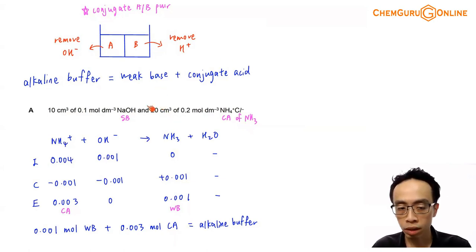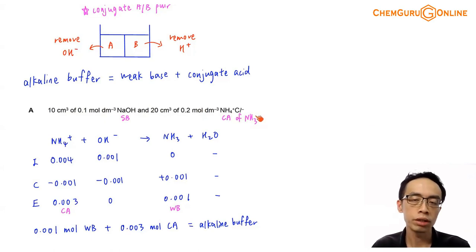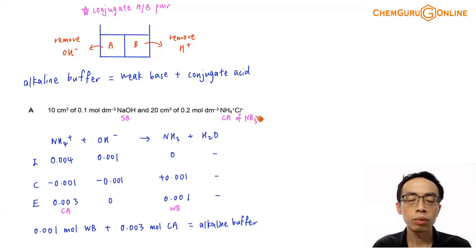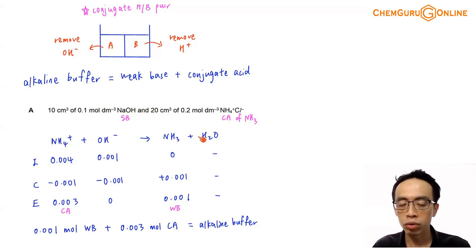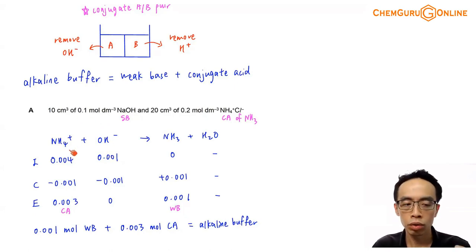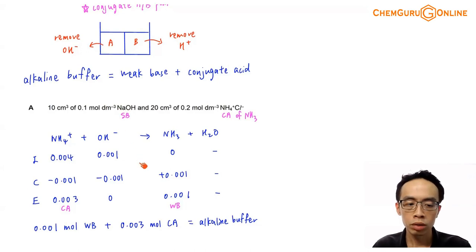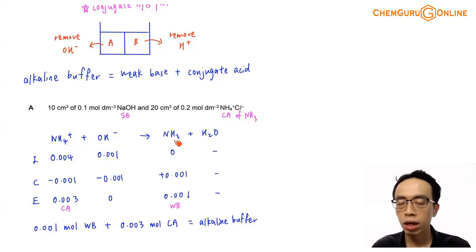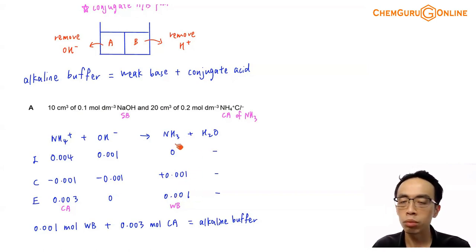I have a mixture of strong base plus conjugate acid. When you add the strong base and conjugate acid together, there will be a reaction between them. We can use the ICE table to quickly determine the resultant solution. The reaction is between ammonium and OH⁻ from sodium hydroxide to give ammonia and water. The number of moles: NH₄⁺ is 0.004 mol, OH⁻ is 0.001 mol, and OH⁻ is limiting — 100% of it will be used up. The change is minus 0.001 for NH₄⁺, minus 0.001 for OH⁻, and plus 0.001 for NH₃. The resultant solution is 0.003 mol of NH₄⁺, no OH⁻, and 0.001 mol of ammonia. I have a mixture of weak base and conjugate acid — this gives me an alkaline buffer.